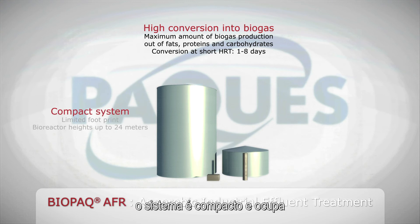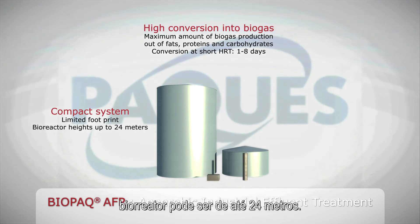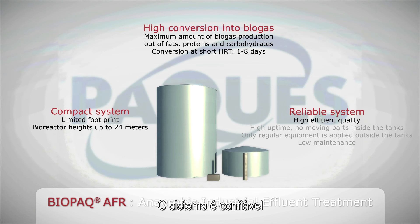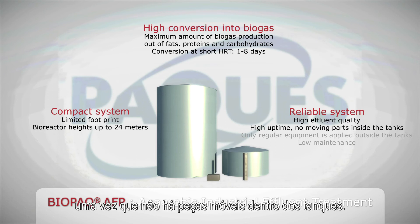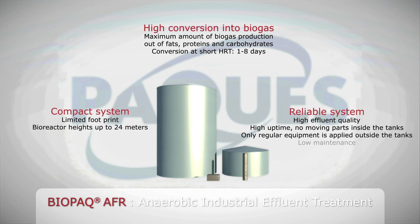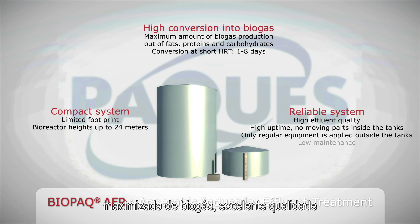Due to the efficient retention of the biomass, the system is compact and has a limited footprint. The height of the bioreactor can be up to 24 meters. The wastewater is efficiently purified, resulting in a constant high effluent quality. The system is reliable with a high uptime, since there are no moving parts inside the tanks. The process only uses regular rotating equipment, such as centrifugal pumps placed outside the tanks. The AFR technology is a reliable, highly efficient process with maximized biomass production, excellent effluent quality and low maintenance requirements.